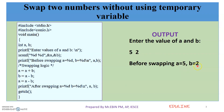We have A value as 5 and B value as 2. We are going to swap these. If we want to write the swap logic, we write a comment. The first statement is: A is equal to A plus B. That means A plus B equals 7.